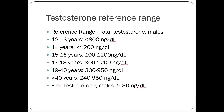Normal testosterone ranges shift throughout puberty and gradually decline with age. Free testosterone — which is unbound and biologically active — is about 9 to 30 nanograms per deciliter, significantly less than total testosterone, since testosterone is highly protein-bound.